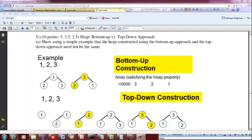So let's say you are given a list of elements 1, 2, 3. If you want to do a bottom-up approach, you write it down as a binary tree first, and then what you do is first check for each of the leaf nodes if it satisfies the heap property.